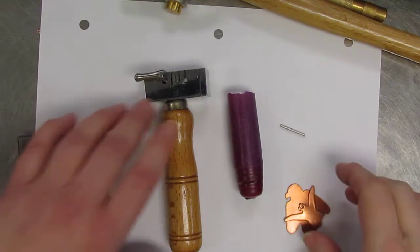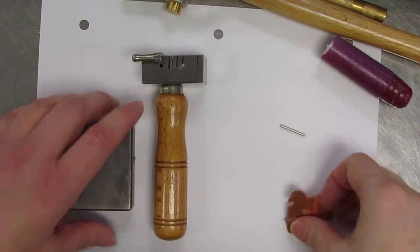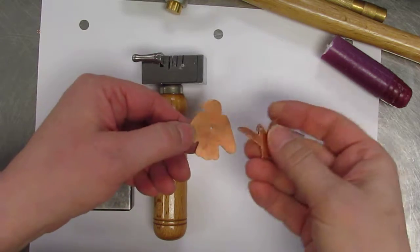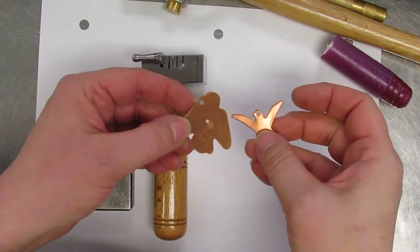In this video I'm going to show you how to tube rivet two pieces of copper together. So I've got my two pieces of copper, I've already got holes in both of them.